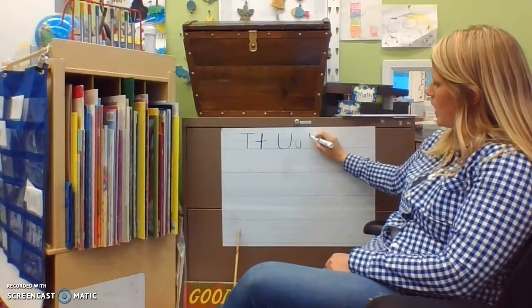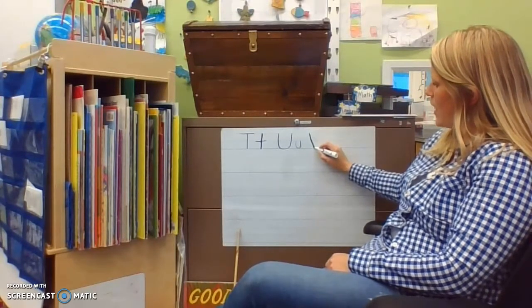For a V, start at the top, diagonal line down, diagonal line back up.